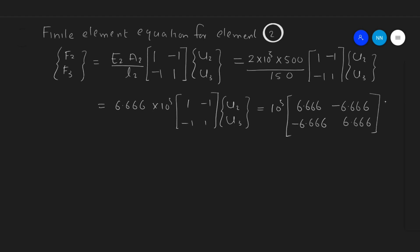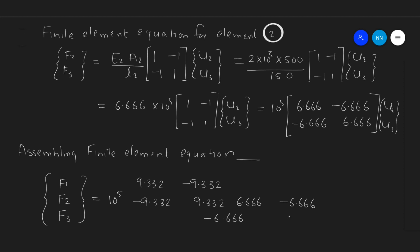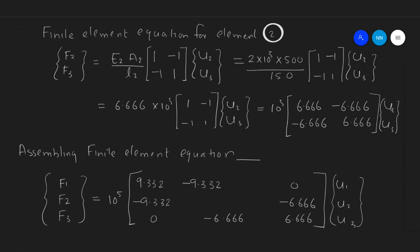Now we have the finite element equation for each element. Let's assemble the finite element equations of both elements. The factor 10⁵ is common to both. In the assembled stiffness matrix, the middle diagonal value is the sum of contributions from both elements: 9.332 + 6.666 = 15.998. This gives the final assembled finite element equation.